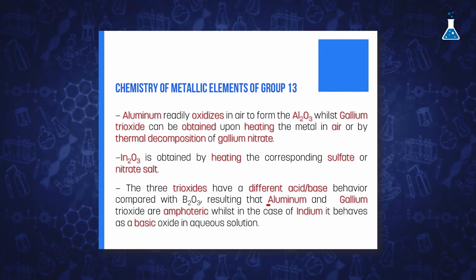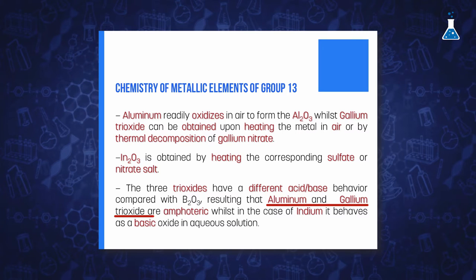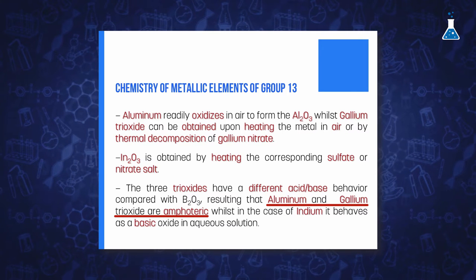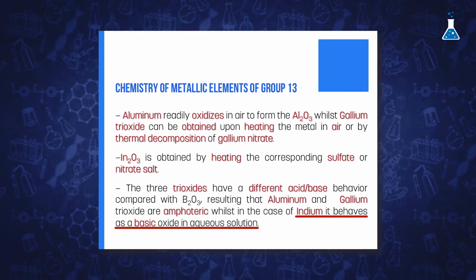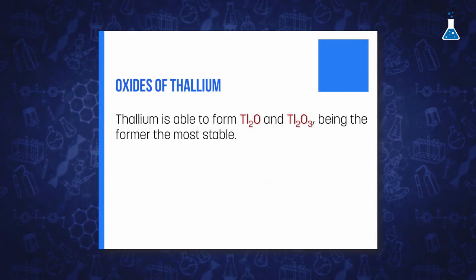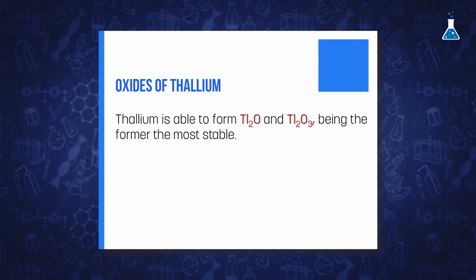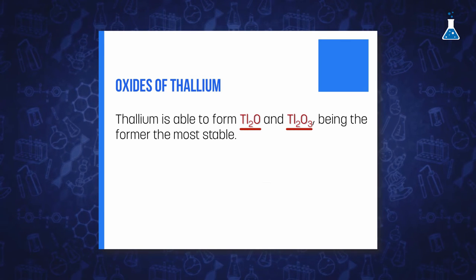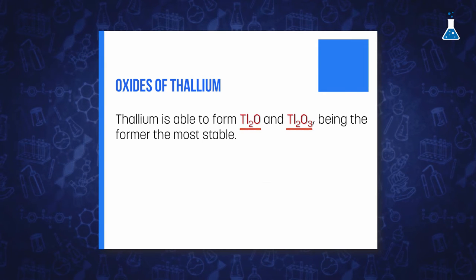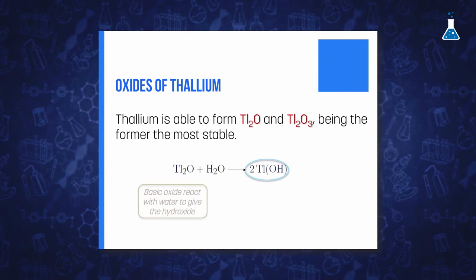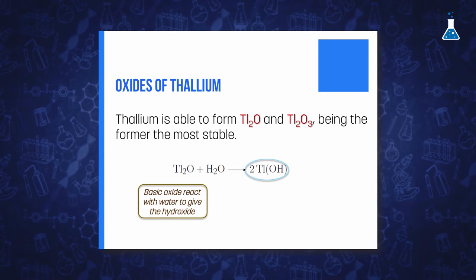The trioxides show a marked difference in their acid-base behavior with respect to what has been described for boron. While aluminum and gallium oxide are amphoteric and react with both acids and bases, indium oxide is basic in aqueous solution. Thallium, on the other hand, is able to form two types of oxides: dithallium oxide (Tl₂O) and dithallium trioxide (Tl₂O₃), with the former being the most stable.